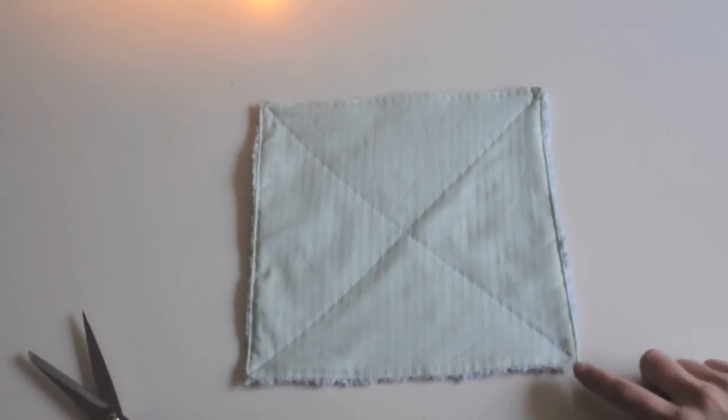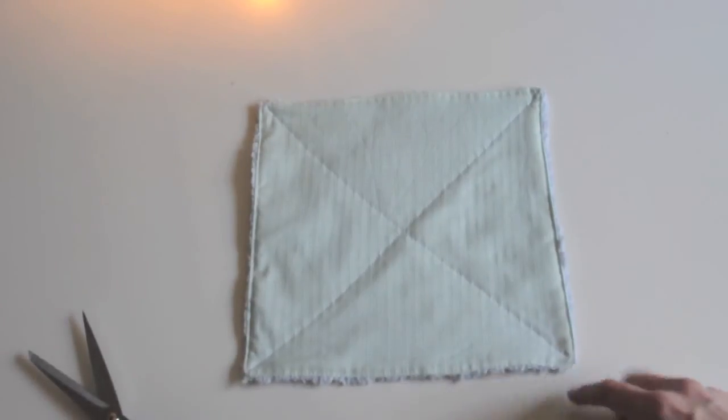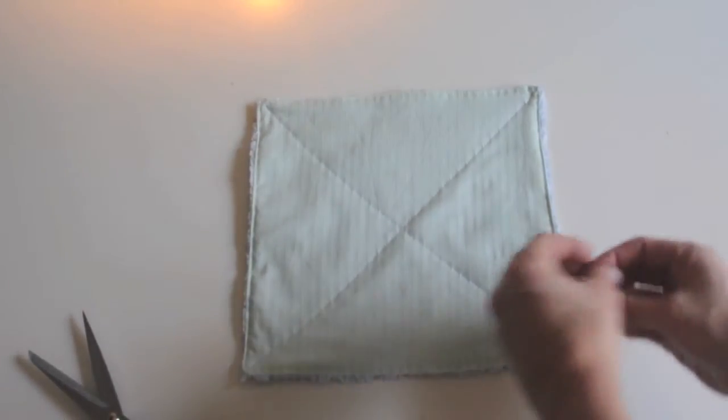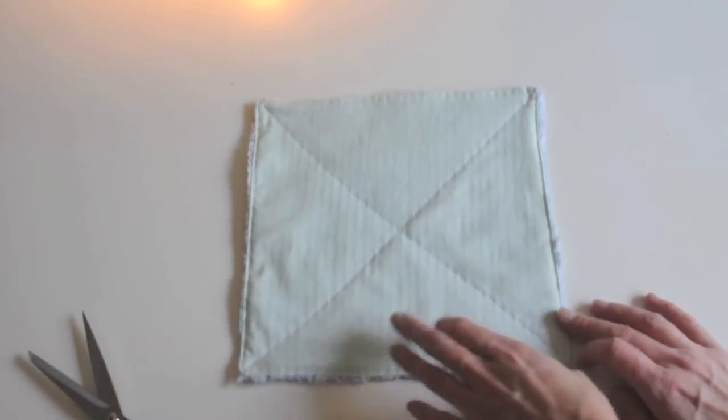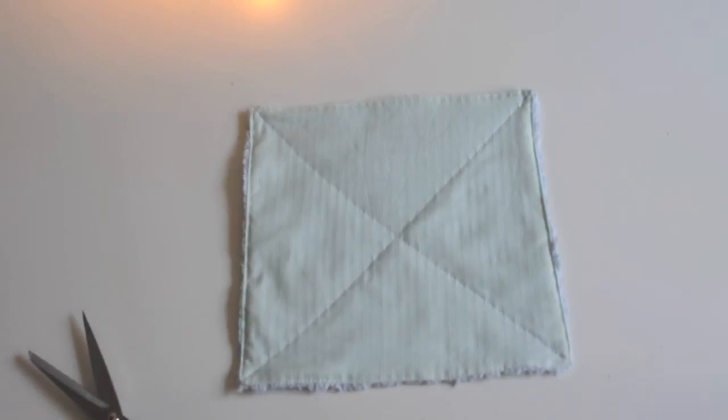So basically just what I did was I stitched along the outside, pretty close to the edge, and then because it's two pieces of fabric you don't want it to come apart so I just quilted it just by making an X. Literally these are my favorite dish towels ever.